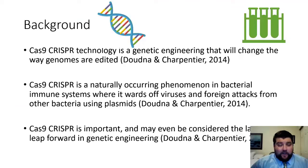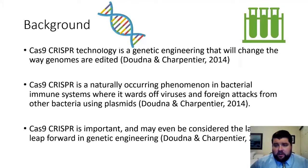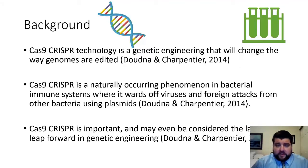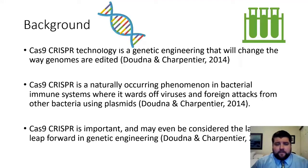Going into the background of what CRISPR-Cas9 technology can do: CRISPR-Cas9 is a genetic engineering tool that's going to change the way genomes are edited. Cas9 is a naturally occurring phenomenon in bacterial immune systems, where it wards off viruses and foreign attacks from other bacteria using plasmids. CRISPR-Cas9 is important and may even be considered the largest leap forward in genetic engineering.